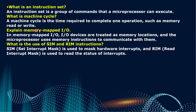What is an instruction set? An instruction set is a group of commands that a microprocessor can execute. What is a machine cycle? A machine cycle is the time required to complete one operation such as memory read or write. In memory-mapped I/O, input/output devices are treated as memory locations and the microprocessor uses memory instructions to communicate with them. What is the use of SIM and RIM instructions? SIM (Set Interrupt Mask) is used to mask hardware interrupts, and RIM (Read Interrupt Mask) is used to read the status of the interrupts.